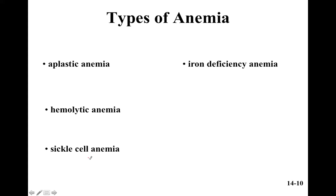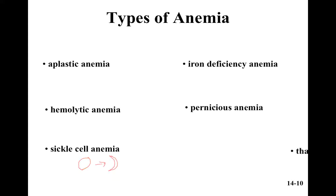Sickle cell anemia causes the red blood cells, because of a defective gene, to become sickle-shaped — especially when they get low on oxygen. Iron deficiency anemia is exactly what it sounds like: low iron means you can't make enough mature red blood cells. Pernicious anemia is a lack of vitamin B12 or the inability to absorb B12, resulting in a lot of immature red blood cells. Thalassemia involves a deficiency in hemoglobin, making red blood cells functional but very short-lived due to a defective gene.